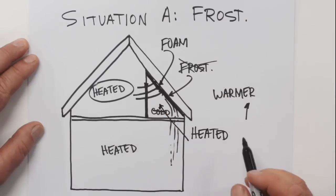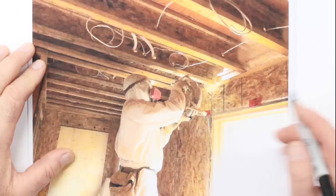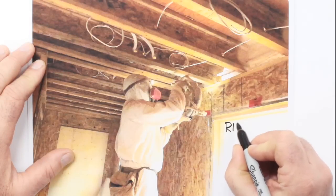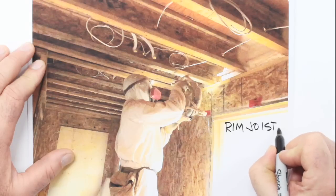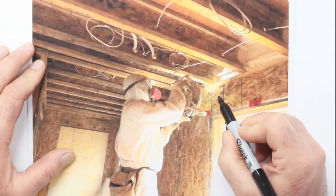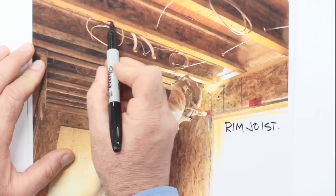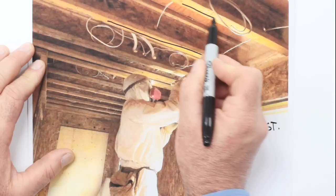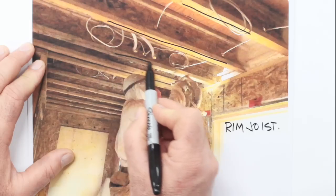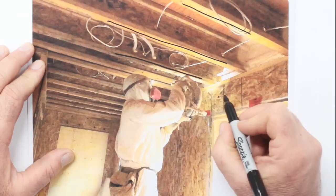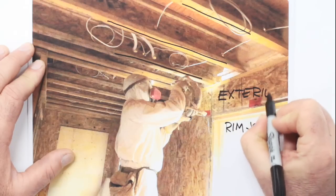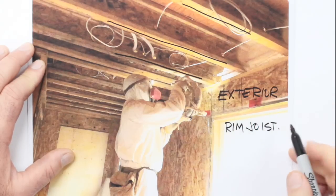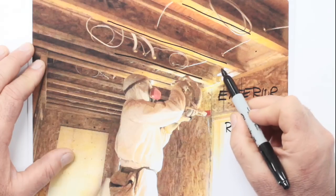Another situation where the unique properties of foam pays off is in what I call a rim joist situation. This always happens around exterior walls where floor joists run and sit on top of those walls. Now, as I said, it only applies to exterior wall situations, whether that's the basement or any above ground wall. But what we've got is the situation here between joists, which can't be properly protected with a polyethylene vapor barrier.